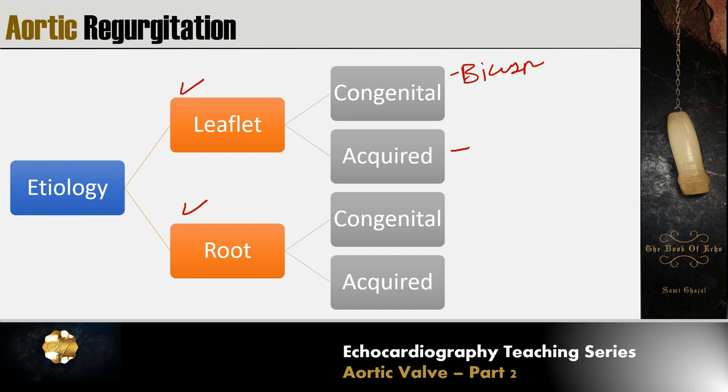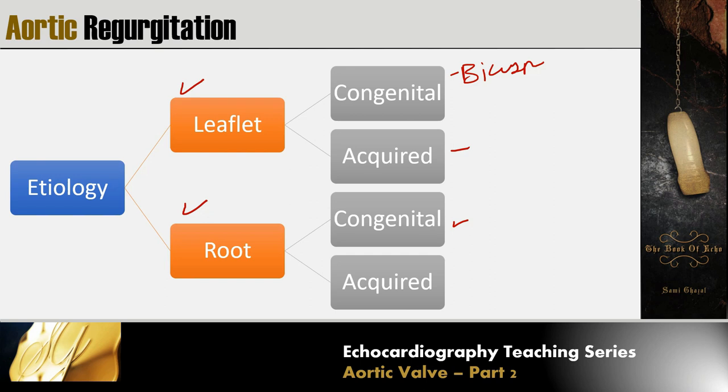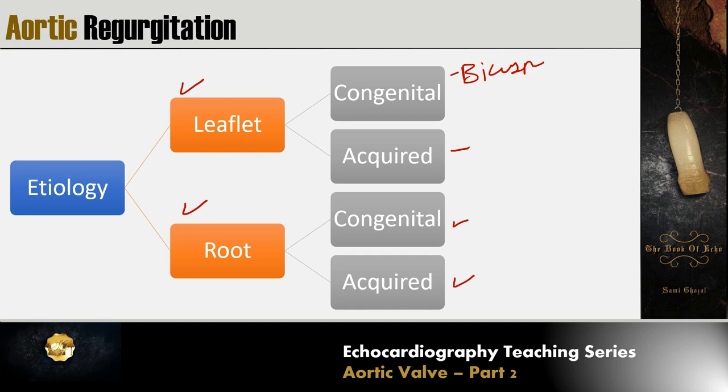The aortic root can also be congenitally affected, as seen in collagen vascular diseases like Marfan syndrome, osteogenesis imperfecta, and Ehlers-Danlos disease. It can also be acquired due to hypertension-related aortic dilatation, dissection, or aortitis as seen in syphilitic disease or Takayasu arteritis.